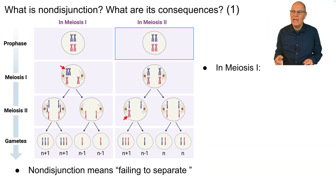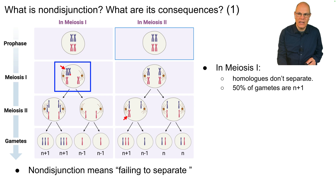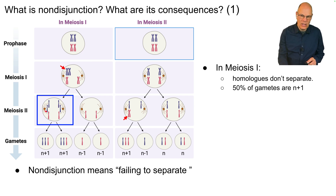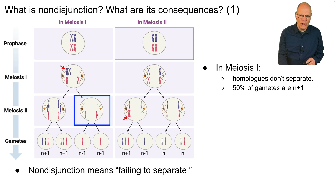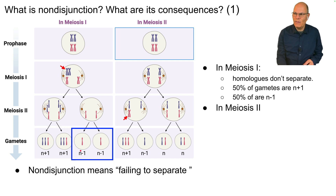There are a couple of variations. In meiosis 1, the homologs don't separate. As you can see, this blue chromosome — these homologs — didn't separate; they stayed together. So the result is that in meiosis 2, we're going to have three chromatids on one side, three over here, one over here, one over here. So 50% of the gametes are n plus one (haploid plus one extra), and 50% are n minus one — the haploid number missing a chromosome.